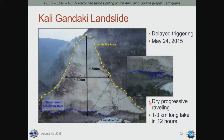Not all landslides occurred immediately during or after the earthquake — some triggered later during aftershocks, and some were delayed for unclear reasons. One example is the Kali-Kandaki landslide, a delayed triggering that happened on May 24th. There was evidence of progressive raveling, and once it formed, a 1 to 3 kilometer-long lake developed within 12 hours. By the time we arrived, the lake had breached, raising concern about flooding downstream. Fortunately, authorities took enough precautions so that no one was injured as a result of this breach.